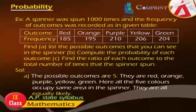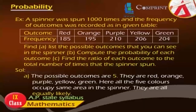Example: A spinner was spun 1000 times and the frequency of outcomes was recorded in a given table. Outcomes: Red, Orange, Purple, Yellow, Green. Frequencies: 185, 195, 210, 206, 204. Find: A. List the possible outcomes that you can see in the spinner. B. Compute the probability of each outcome. C. Find the ratio of each outcome to the total number of times the spinner was spun.